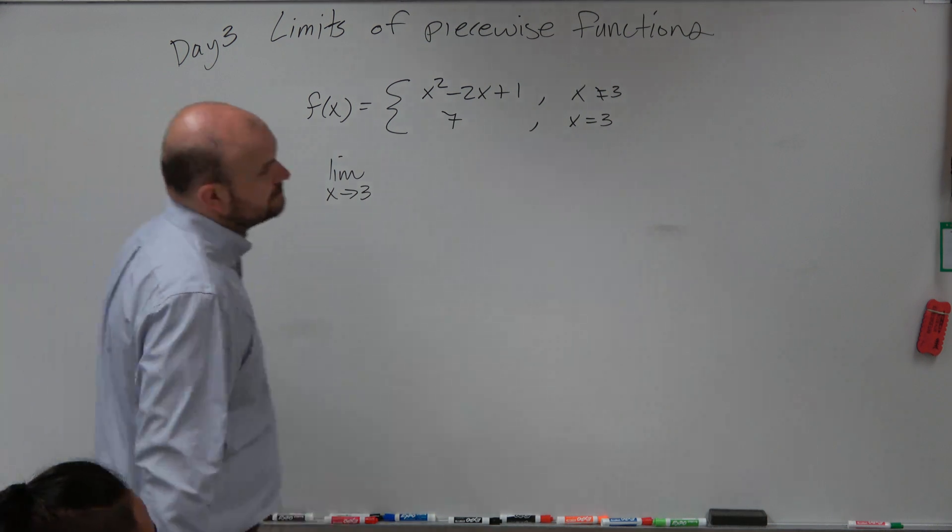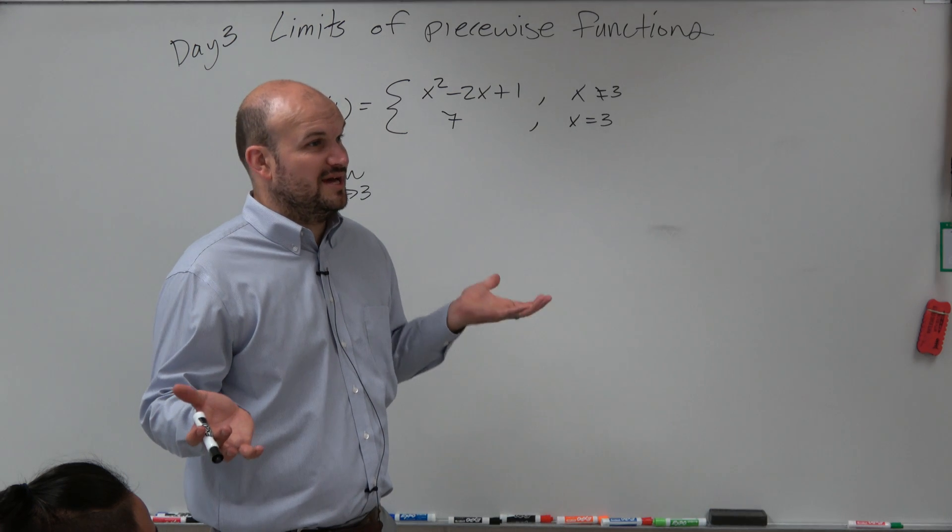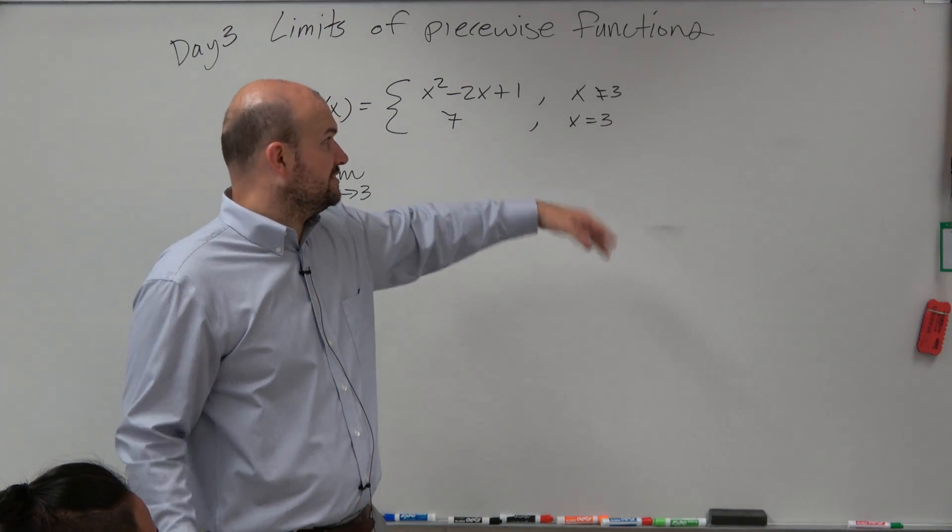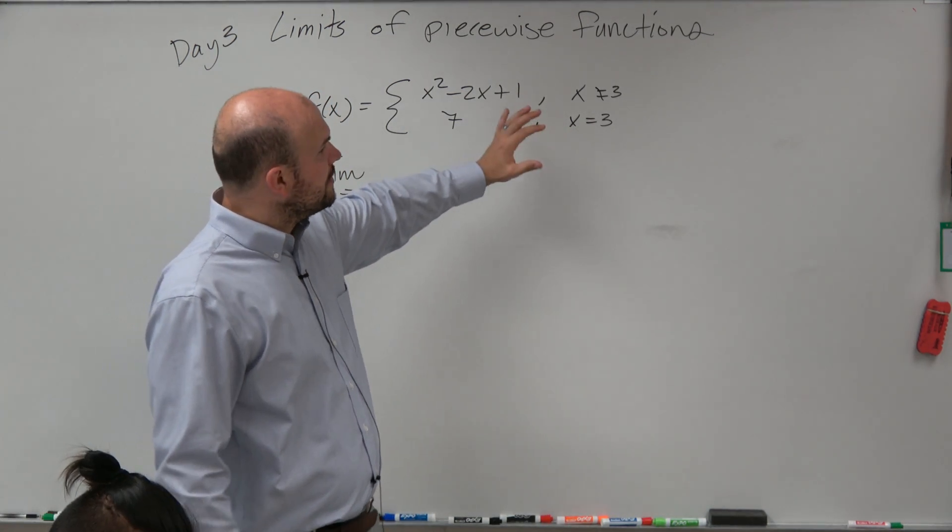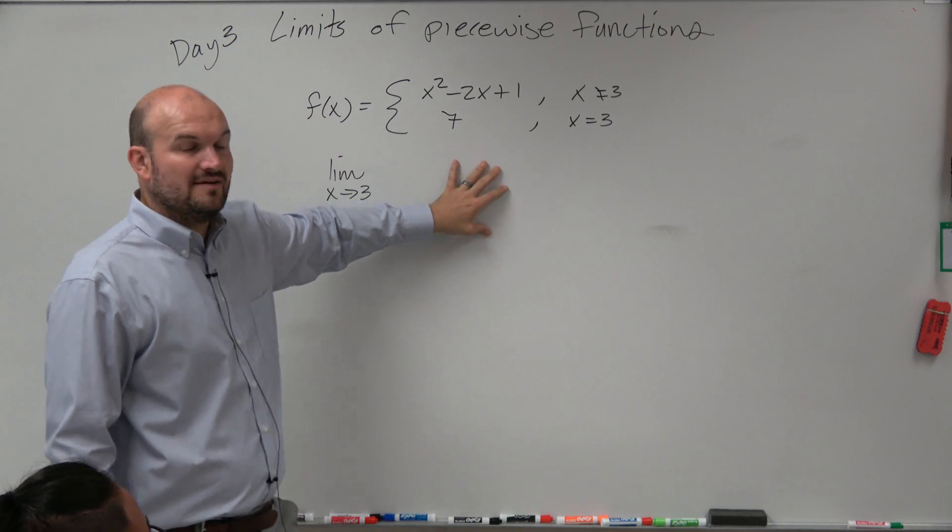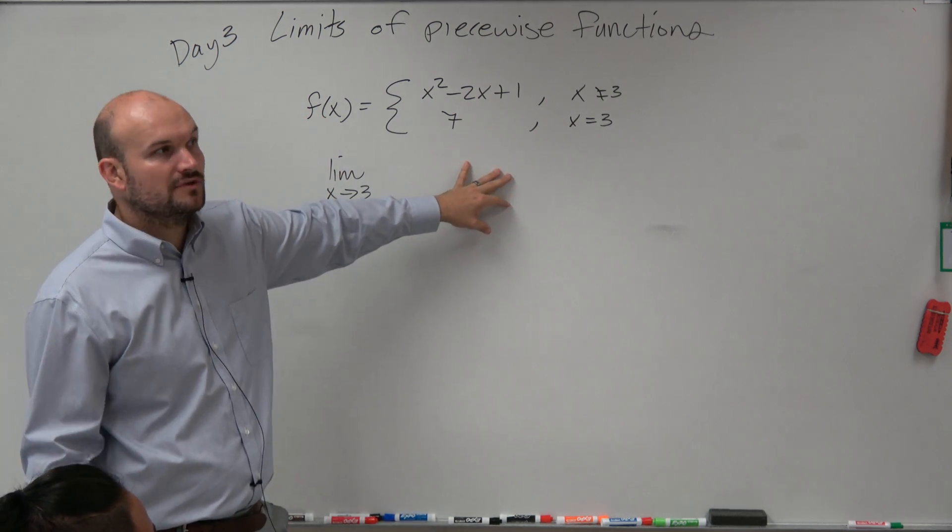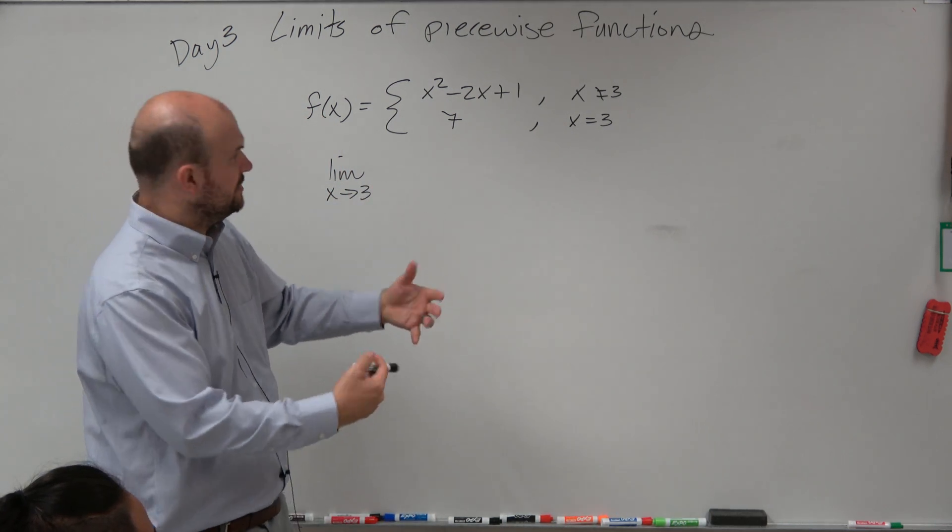So in this example, this one doesn't really have as obvious left and right side, right? There's no inequalities on this one. So I think in this one it's at least helpful to have a general understanding of what exactly the graph looks like. You don't need to graph it, but just a general understanding.